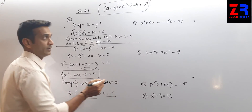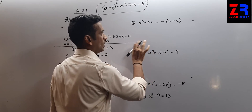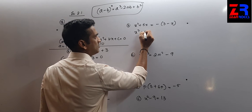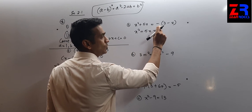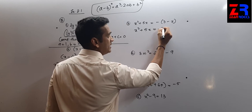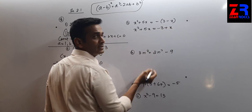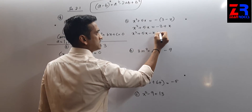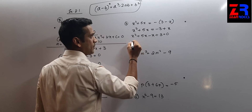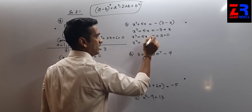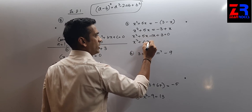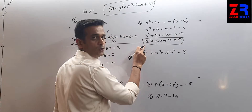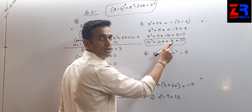Question number 3: x² + 5x = x² minus 3 + x. Opening the brackets and taking all terms to the left-hand side: x² + 5x minus 3 = 0. Then x² + 5x minus 1x gives 4x, so x² + 4x + 3 = 0. Comparing, we get a = 1, b = 4, and c = 3.